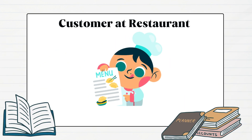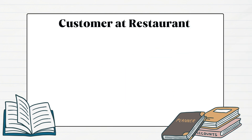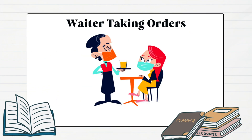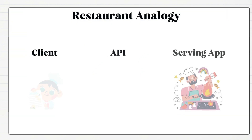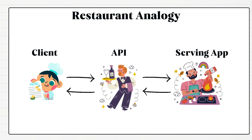Imagine you are at a restaurant. The menu represents the services available, or the food items which you can order. You as a customer decide what you want to eat. You don't go into the kitchen and prepare the food yourself. Instead, you communicate your order to the waiter who then passes the order to the chef in the kitchen. The chef then prepares the food and the waiter brings it back to you. In this analogy, you are a software application which wants to use the service of another application which is the Kitchen. The waiter is the API which communicates your request to the other application. The Kitchen is another software application like a server that processes the request and sends back the response, which is food in this case.